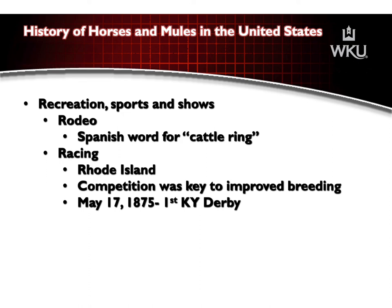The first Kentucky Derby was run on May 17th of 1875. The Derby was sponsored by the Louisville Jockey Club and Driving Association, which owned the track now known as Churchill Downs. The Kentucky Derby race was named after the Epsom Derby, first run in 1780 under the sponsorship of the Earl of Derby. Today, the Kentucky Derby is the most prestigious race for thoroughbreds in the United States and the first race in the Triple Crown for three-year-olds. Each year in May, horse enthusiasts look to Churchill Downs in Louisville. The Kentucky Derby is the oldest continuously run race in America.